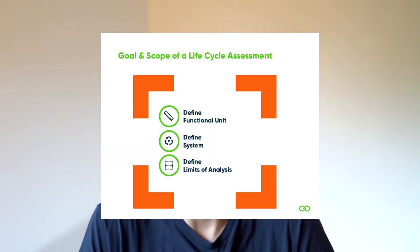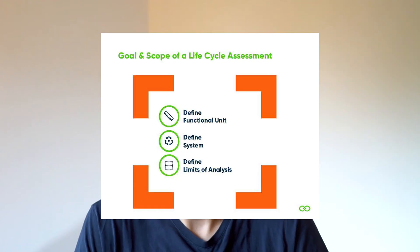So now we know who we are conducting the assessment for, but before we start crunching numbers, we need to look at what we will actually analyze. First, we define what we will be assessing — will we analyze a product, material, or an entire company? How much will we need to analyze? We want to define the functional unit, for example, one kilogram of tomatoes.